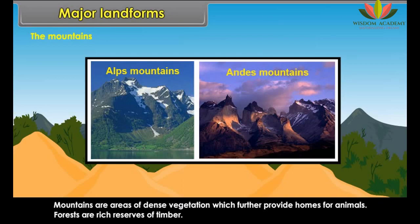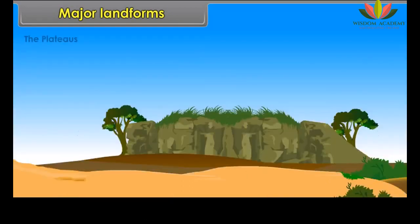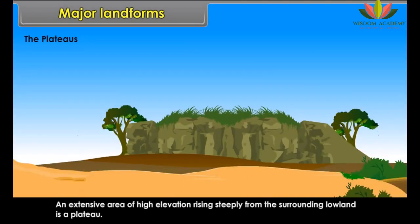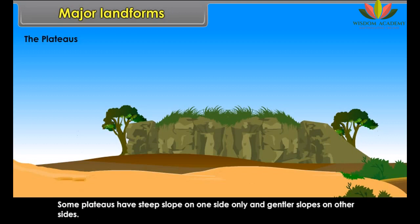The Himalayan Range, the Alps and the Andes Mountains are some examples of mountains. Mountains are areas of dense vegetation which further provide homes for animals. Forests are rich reserves of timber.